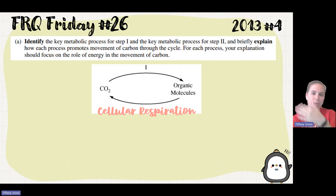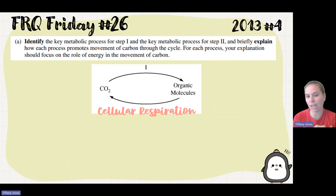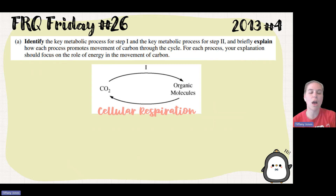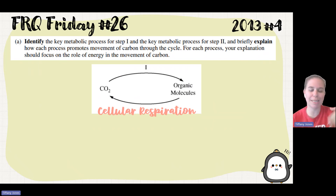We also have to explain step two. In cellular respiration, we break down the organic molecules and release the potential energy stored in them. That energy is released in the form of high-energy electrons carried by NADH and FADH2 to the electron transport chain, which generates a proton gradient. That proton gradient is then used to synthesize ATP via chemiosmosis through ATP synthase, and that converts us back into carbon dioxide.